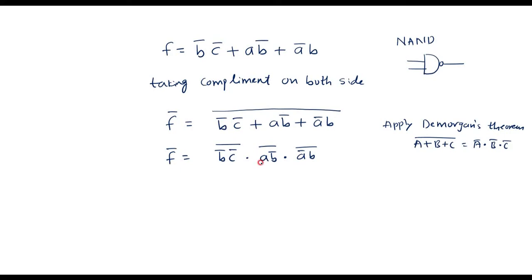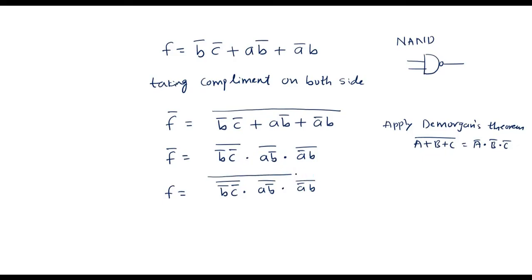Now I should replace f̄ by only f, so again I will take complement on both sides. Complement of complement becomes f. Therefore f is equal to [(b̄c̄)̄ · (ab̄)̄ · (āb)̄]̄. So I have reduced the given function, and there is only a dot operator here.